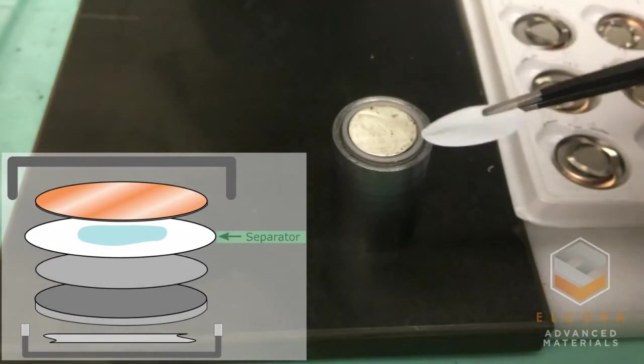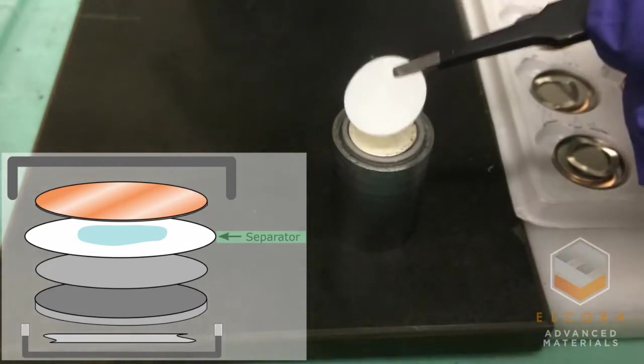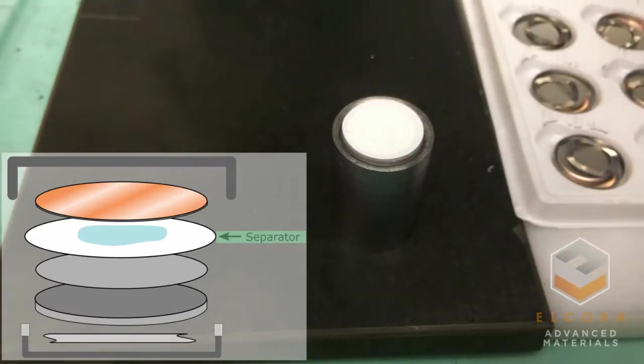I next place a separator onto the lithium disk. The separator is slightly larger in diameter than the electrodes. It electrically isolates the electrodes but allows the lithium ions to flow between them.